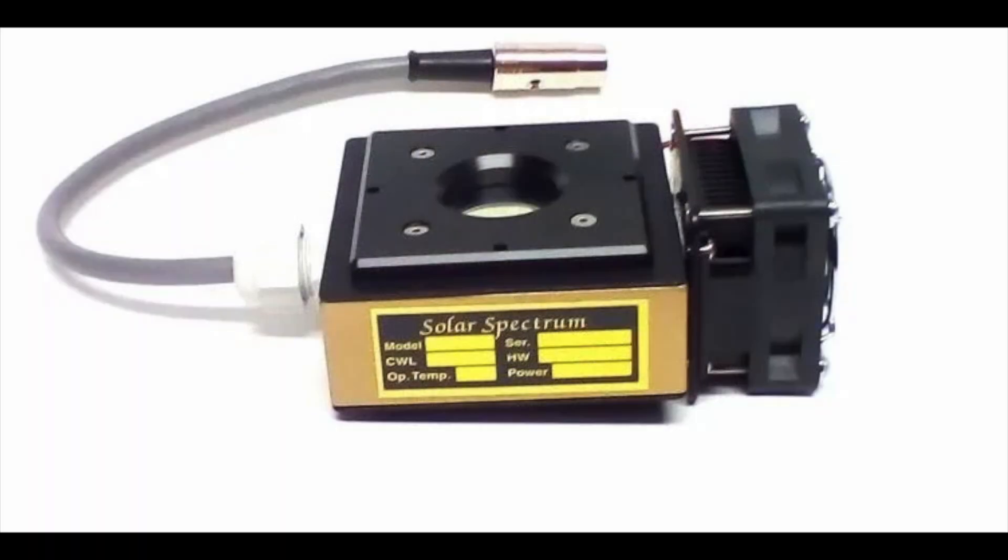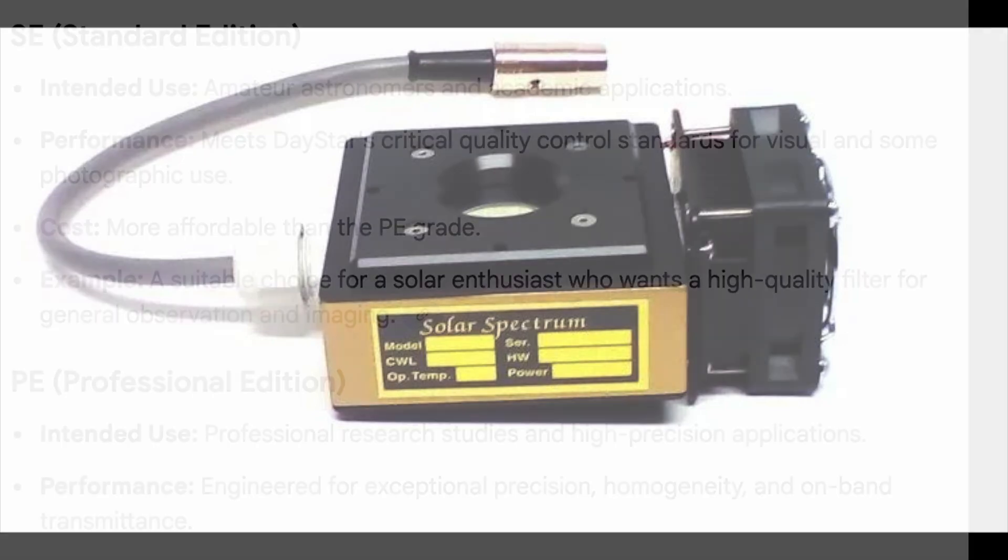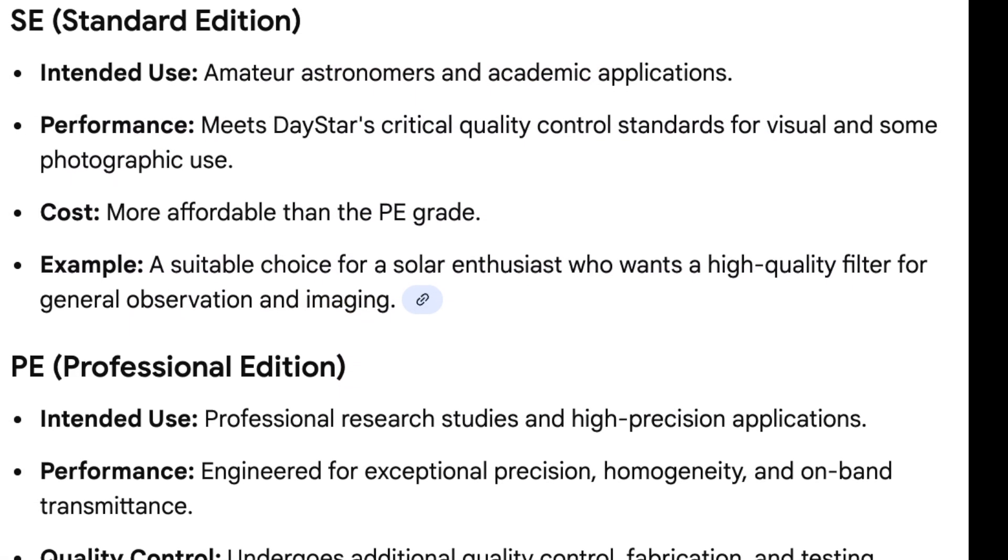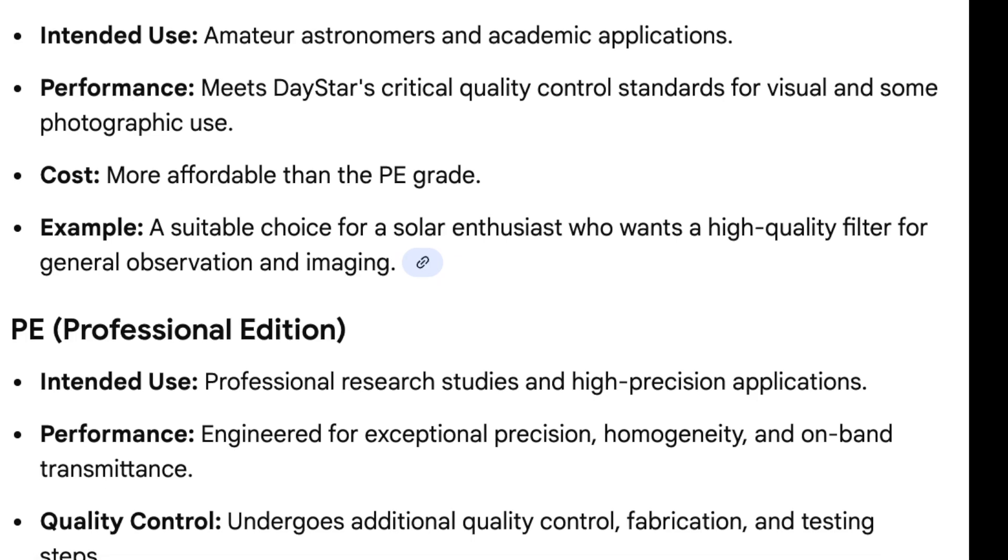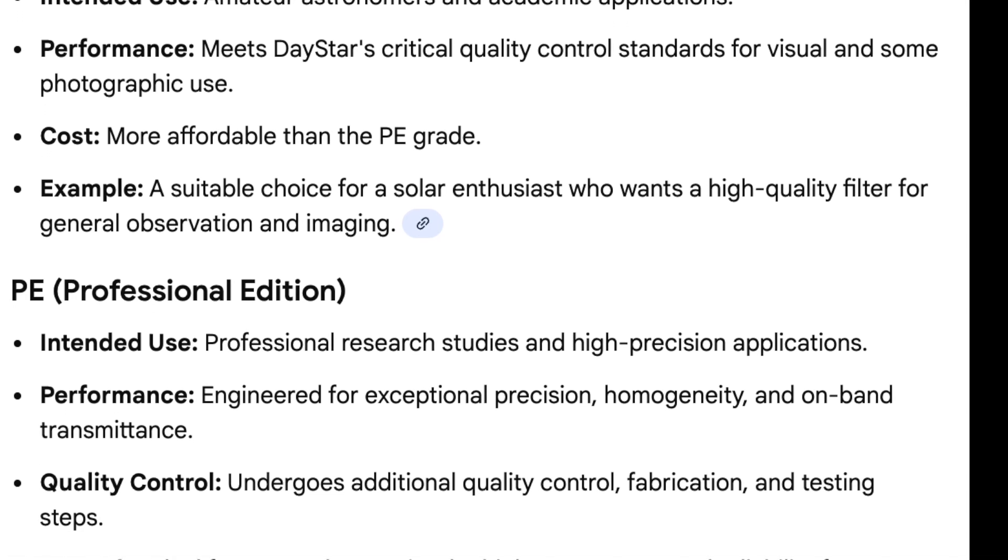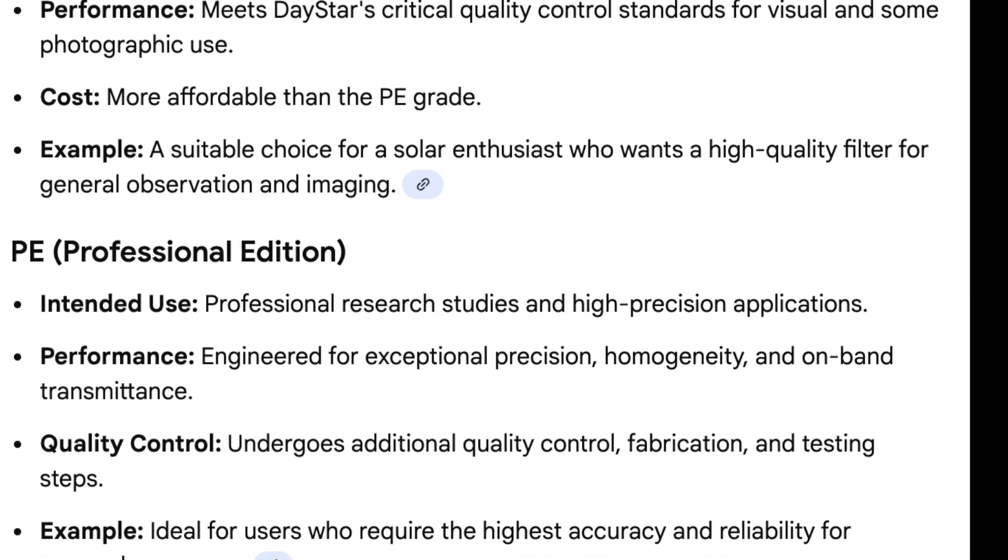Solar Spectrum selects extremely light, transparent, highly uniform mica, spectroscopically tested. Daystar publicly states that they sort mica pieces into bins, such as SE grade and PE grade, which go into different product lines.